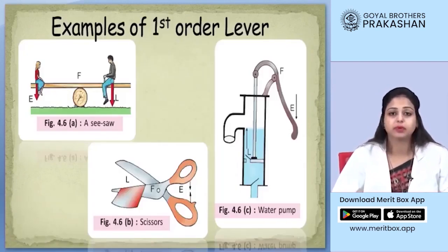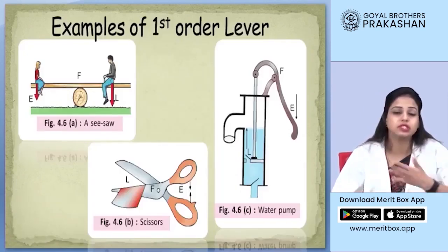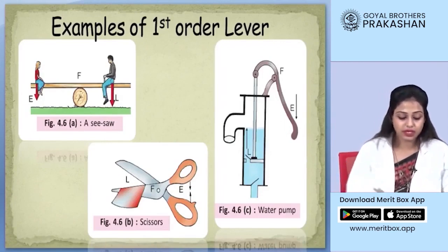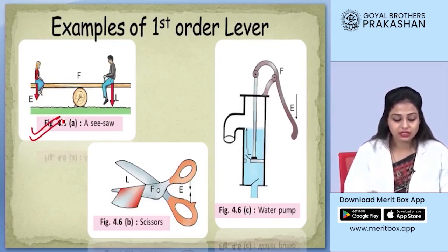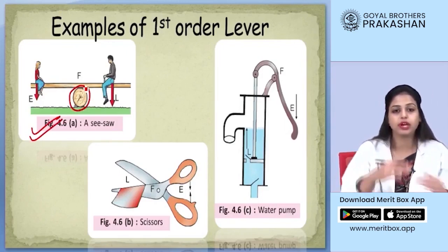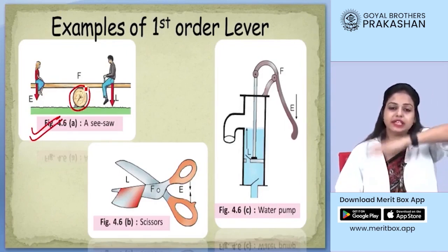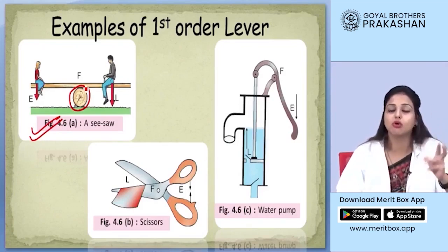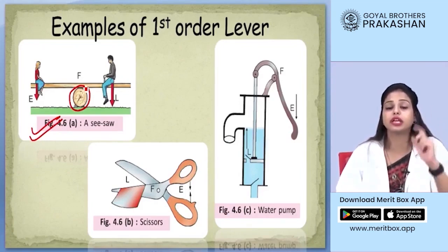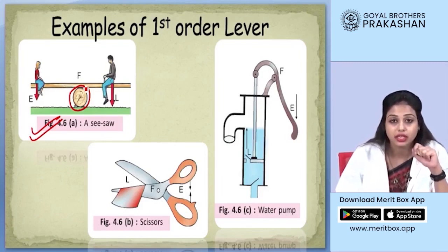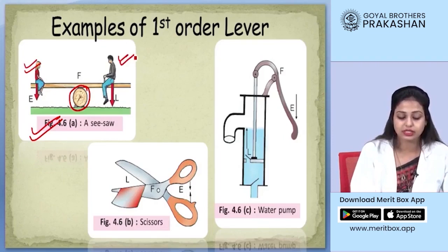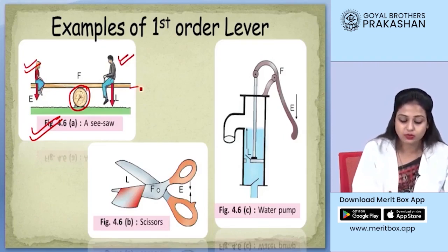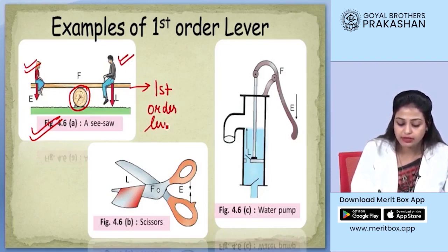There are various examples of first order lever that we see in our daily life. For example, a seesaw — you must have played on one. A seesaw has a central point on which it bends on each side when two students sit on it. One student can be considered as the effort and the other as the load, and this demonstrates the principles of a first order lever.